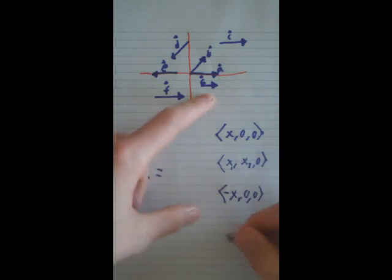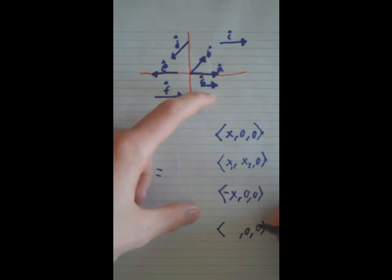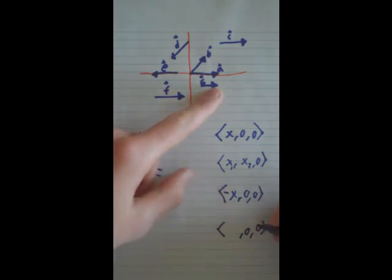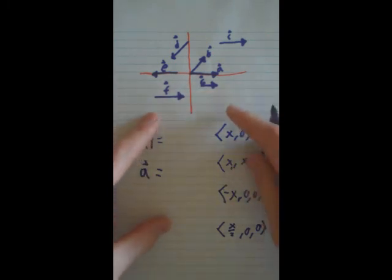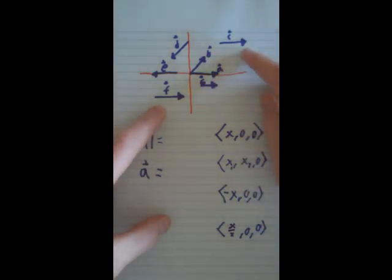Now, G, it has the same, it doesn't move on the Y or on the Z, just like A, but it's shorter. So, it's, we'll say it's about one half of A. So, it's going to be X over 2. So, that's why G isn't equal to A. And that's why the only two vectors that are equal to A are F and C.